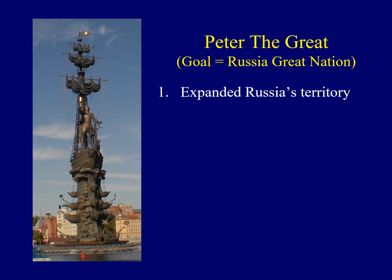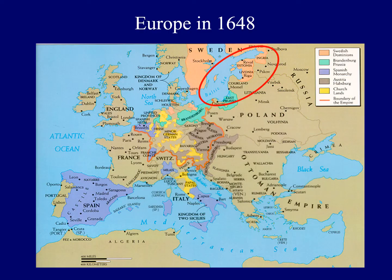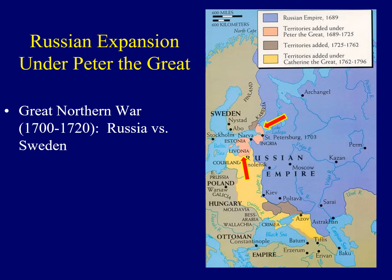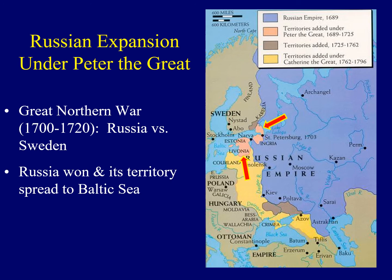Peter took several steps to make Russia a great nation. The first was to expand Russia's territory. Notice the circled area on the map showing the Baltic Sea and the countries that border it. When Peter became Tsar, Russia had no access to the Baltic Sea, which hurt Russia's trade. In order to achieve this goal, Peter undertook the Great Northern War — a war between Russia and Sweden. The arrows on the map identify some of the new territories acquired by Russia. Russia was victorious and was able to spread its territory to the Baltic.